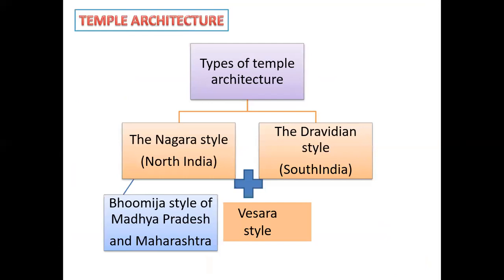Temple architecture is of two types — there is a tree diagram as a concept map. The two main types are Nagara style and Dravidian style. Nagara style is prevalent in North India, and the Dravidian style is the temple style of South India. The Nagara style is also reflected in the Bhumija style of Madhya Pradesh and Maharashtra. Most temples in Madhya Pradesh and Maharashtra follow the Nagara style. A combination of the Nagara style and the Dravidian style is called the Vesara style.